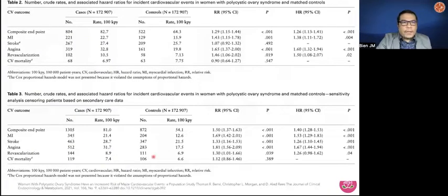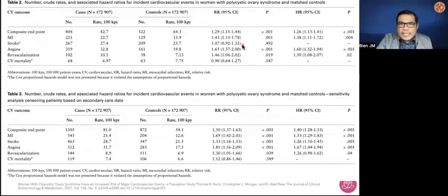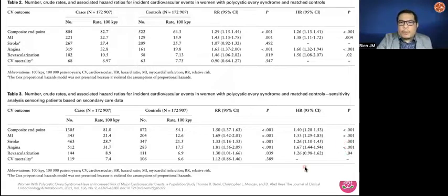This is important because when you look at MI, stroke, angina, revascularization, and CV mortality as composite endpoints in this analysis, patients with PCOS compared to control have a higher risk for those events — MI, stroke, angina, revascularization — and the adjusted risk is also significant for those endpoints.